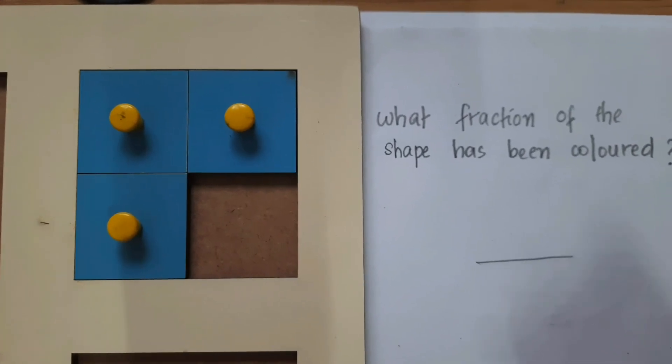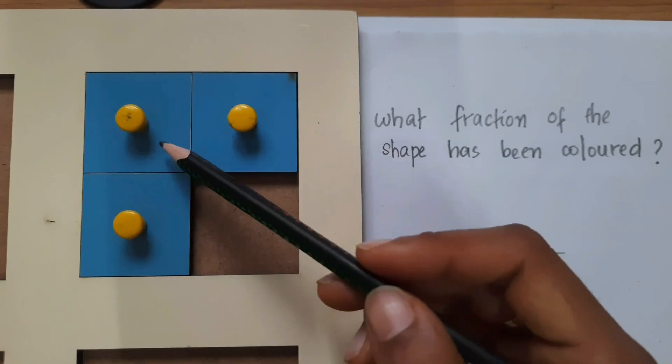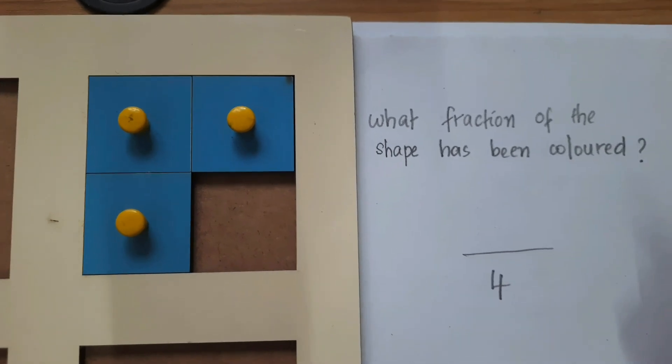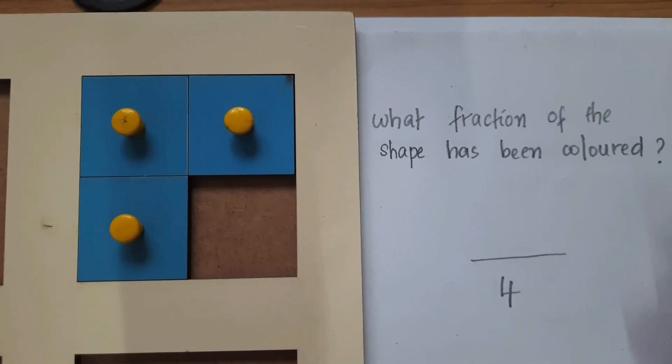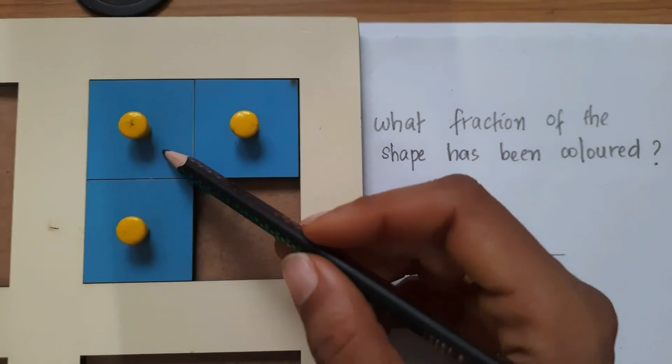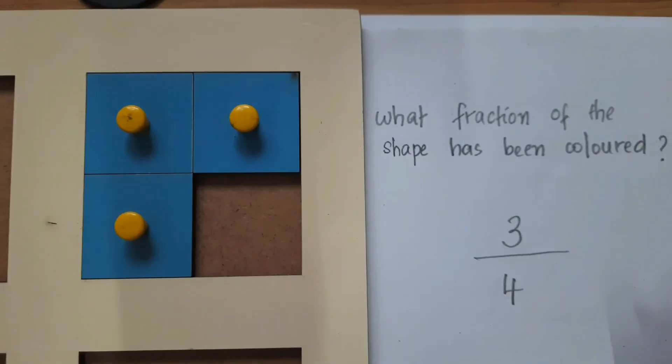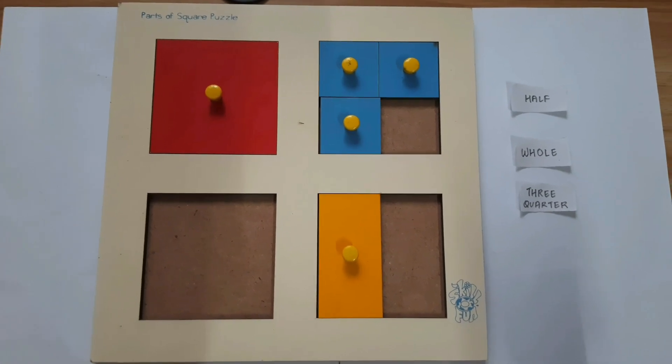Ask the child how many parts are in total. Let the child count: 1, 2, 3, 4. Count the colored parts: 1, 2, 3. So the answer is 3 by 4. Ask the child to label this.